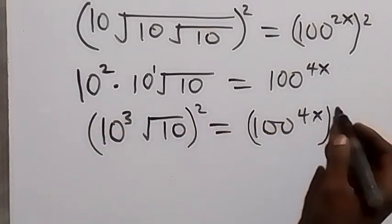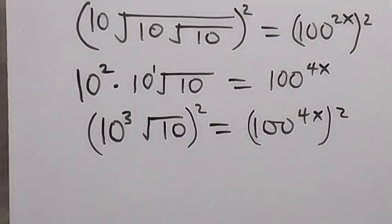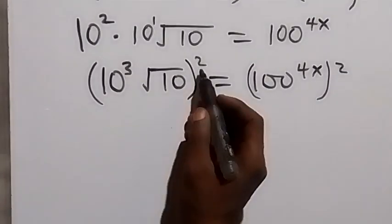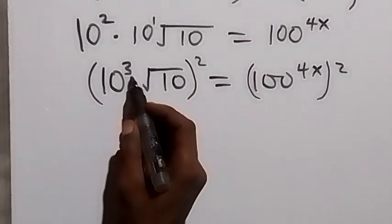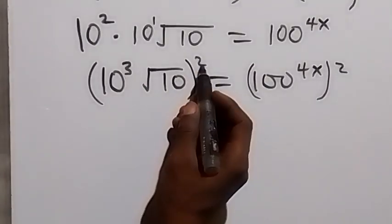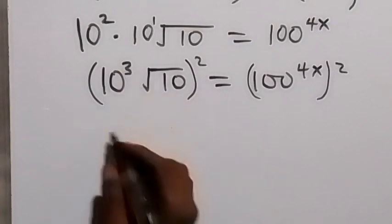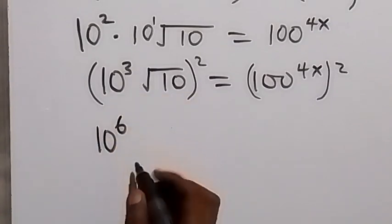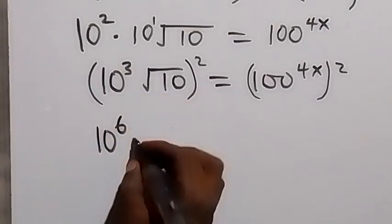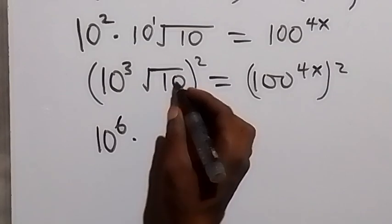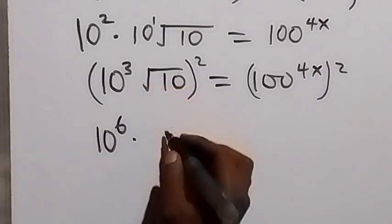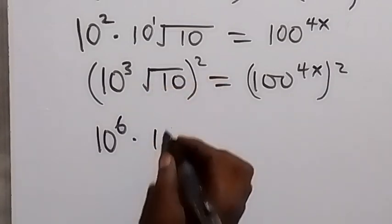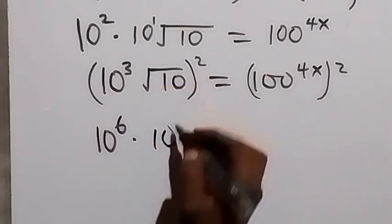Next we square both sides again. The square here affects 10 raised to power 3 — the power multiplies — that will become 10 raised to power 6. Also we square root 10, and the square of root 10 is 10, because the square cancels the square root.